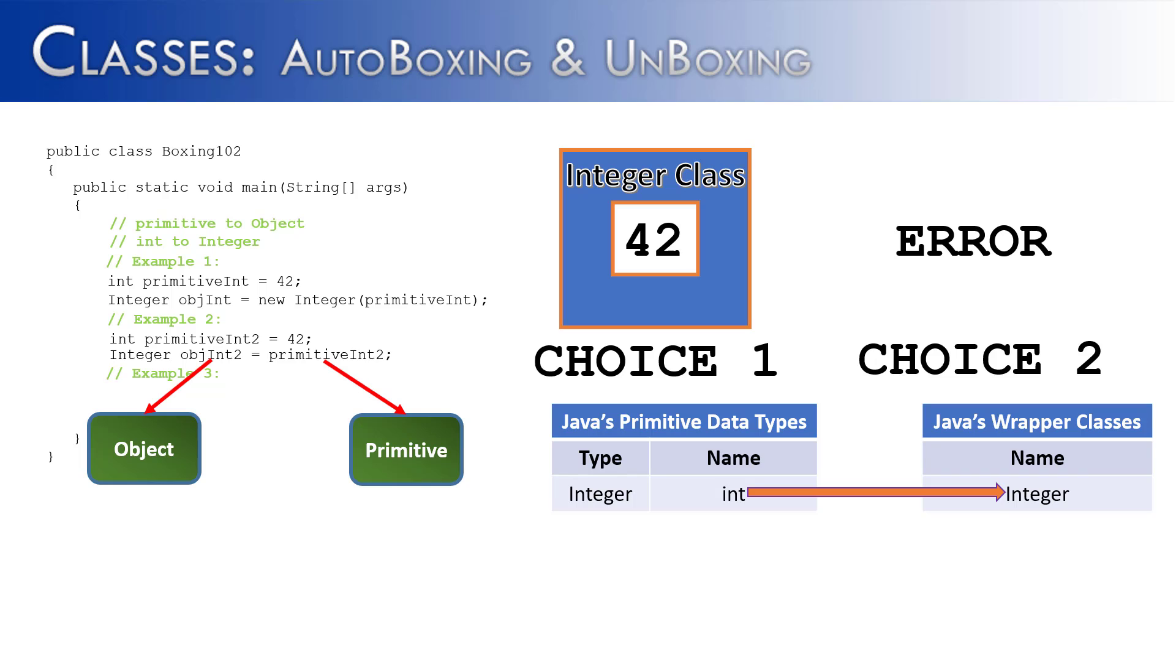Is objint 2, which is an object, going to accept primitive without telling it to convert? And the answer is choice 1. It is going to wrap it.